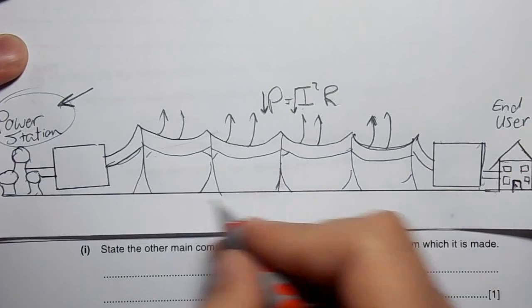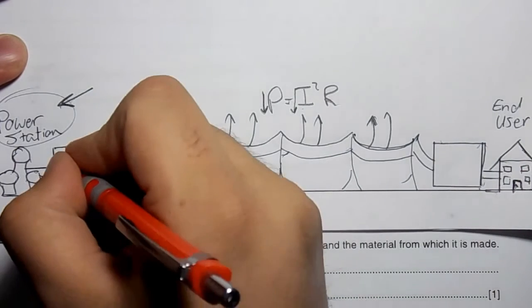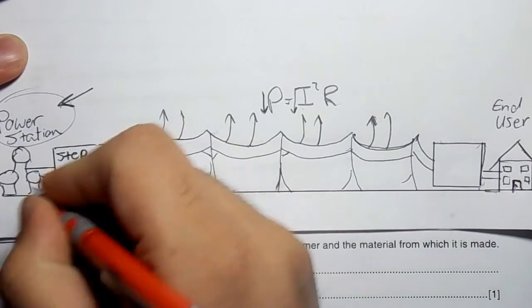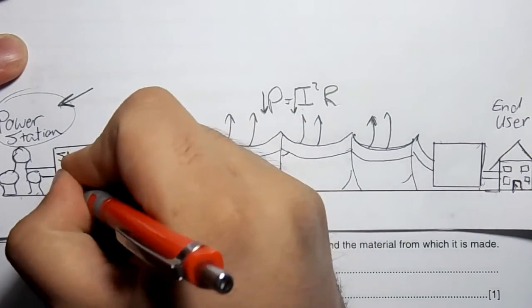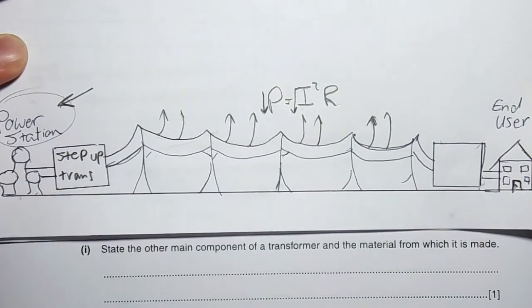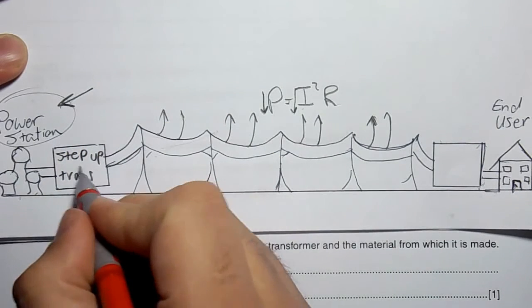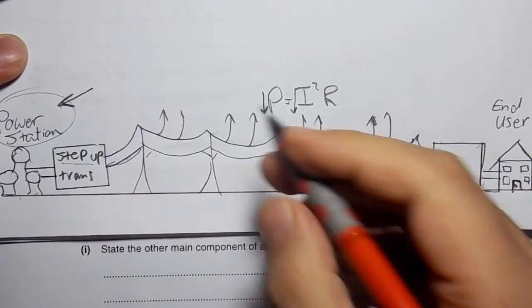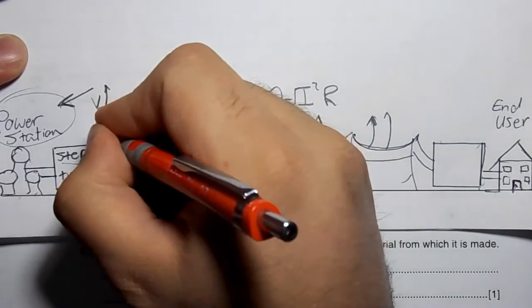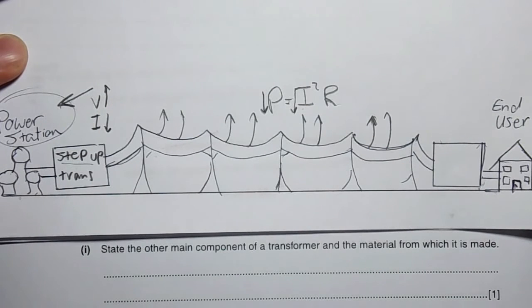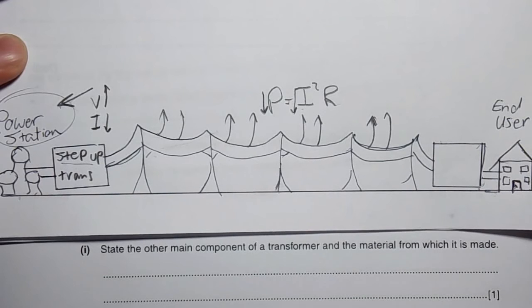Here are the components. After the power station, we place a step-up transformer. Yes, step-up transformer - it raises the voltage very high and drops the current very low. It's a property of transformers that if voltage increases, current decreases, and vice versa - they work opposite to each other.